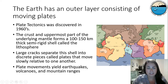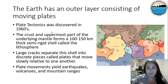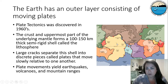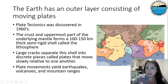The Earth has an outer layer consisting of moving plates. We'll have a whole lecture devoted just to plate tectonics, which was discovered in the 1960s — a relatively new concept considering how important it is to the study of geology. The crust and uppermost part of the mantle form an approximately 100-kilometer-thick shell called the lithosphere. Large cracks separate this shell into discrete pieces that slowly move relative to one another. We're sitting here in the North American plate, and right here in California we are up against both the North American plate and the Pacific plate. Most places where these plate boundaries occur, we see earthquakes, volcanoes, and the formation of mountain ranges.